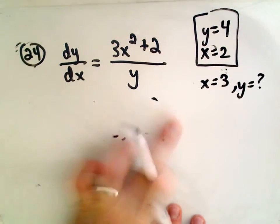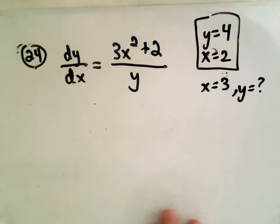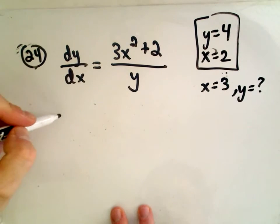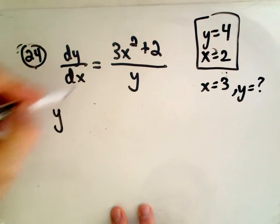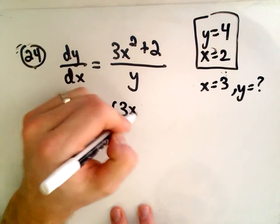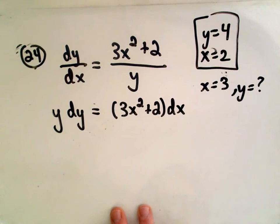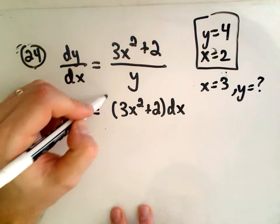So remember with a separable differential equation, what you do is you try to put all the y's on one side and all the x's on the other. And we can achieve that just by cross-multiplying. And we get y dy on the right side, we would get 3x squared plus 2 dx. And then the point is, once we have our variables separated out, we just integrate both sides.